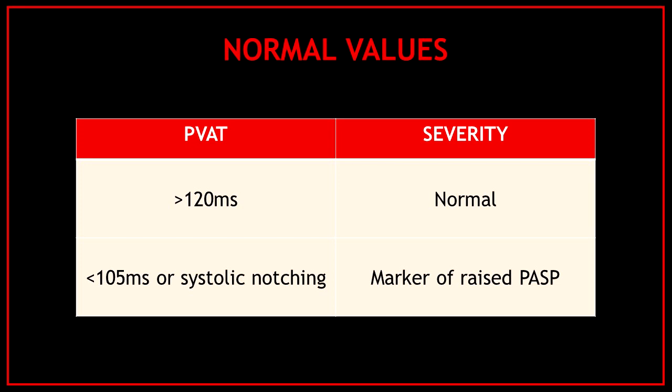You can find different normal values depending on which guideline you are following. However, a pulmonary velocity acceleration time of more than 120 milliseconds is considered normal, and a pulmonary velocity acceleration time of less than 105 milliseconds or the evidence of systolic notching is considered a marker of raised pulmonary artery systolic pressure.